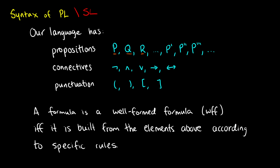We can also use P' or P'' by using these little apostrophes after each one. Or we can also give them subscripts like P1, P2, P3, and so on. So if we have more than 26 propositions, we don't run out of letters to use.